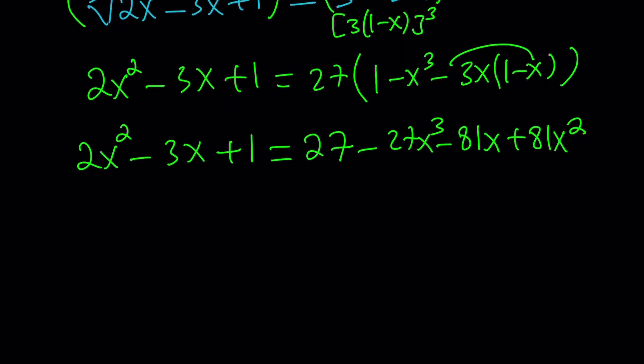Now, this is cubic. Let's put everything on the same side. 27x cubed, and then 81x squared, that will be subtracted from the 2, that should be minus 79x squared. Oh, that doesn't look good. And then I'll bring the 81x over, it's going to be 78x. And then finally, 1 minus 27, that should be minus 26 equals 0.